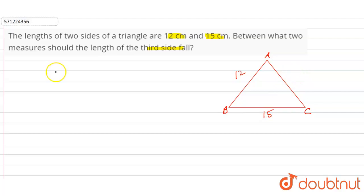The concept here is that if A, B and C are the three sides of any triangle, then the third side should range between the subtraction of the remaining two sides to the addition of the remaining two sides.